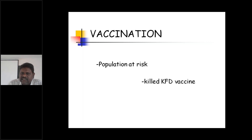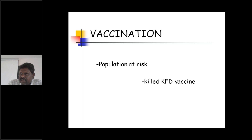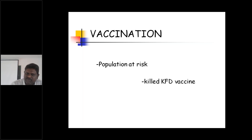These at-risk people must be given vaccination. A killed KFD vaccine is available in the market and can be given to protect them from KFD disease. The population at risk — cultivators in the forest, tribal population residing near the forest, woodcutters, cattle rearers, and researchers who frequently visit the forest — all must be given vaccination.